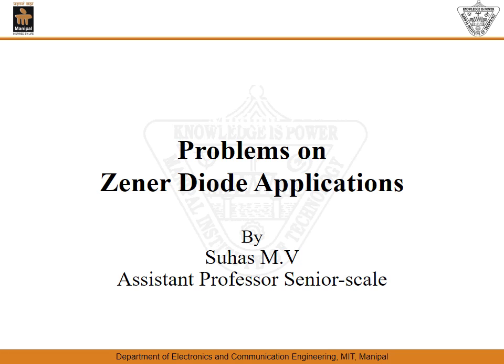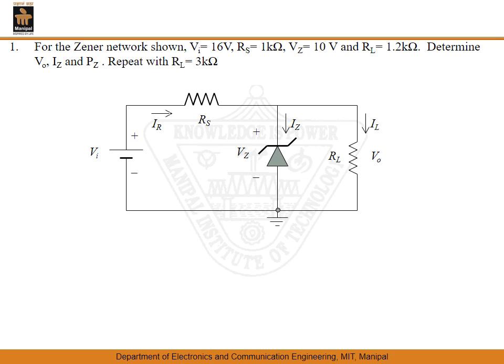Solving some of the problems on applications of Zener diode would surely give us more details on the working of the Zener diode and more clarity. In the first problem, all values are fixed: the input voltage is fixed, the series resistance is fixed at 1 kilo ohm, the Zener voltage is 10 volts, and the load resistance is fixed at 1.2 kilo ohm. We need to determine the output voltage V0, the Zener current, and the power of the Zener diode.